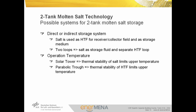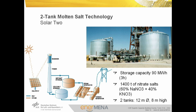The first large-scale implementation of a two-tank molten salt storage system was the SOLAR2 research project. During the 1990s, hot molten salt from a central receiver was stored directly at 565°C. This storage system shows a thermal capacity of 90 MWh, allowing storage-based operation for 3 hours. The temperature difference between hot and cold tank was 275°C. The main components were two tanks with a diameter of 12 meters and a height of 8 meters, containing 1,400 tons of a eutectic mixture of sodium nitrate and potassium nitrate.